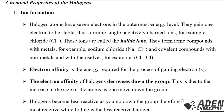Halide ions form ionic compounds with metals — for example, sodium chloride, which contains sodium ion and chloride ion bonded together. They also form covalent bonds with non-metals and with themselves, for example, chlorine bonding to another chlorine atom to form Cl₂.